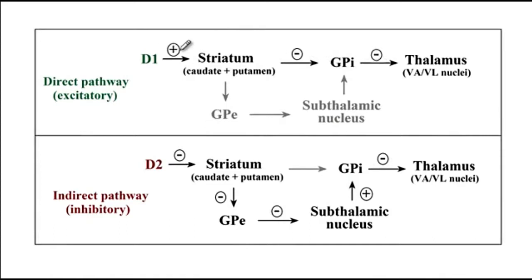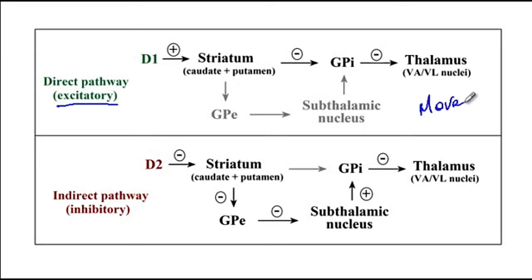Excitatory neurons are shown with a positive circle and inhibitory neurons with a negative circle. Generally, the thalamus is negatively regulated by the globus pallidus internus, so the default state of the brain is no movement. The direct pathway, also known as the excitatory pathway, will enhance the function of the thalamus to induce movement — therefore the direct pathway increases movement.